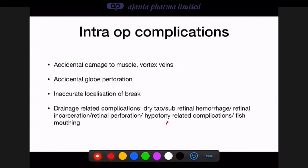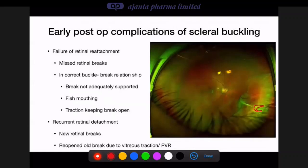Fish-mouthing can occur where the buckle is well-placed but the break communicates with fluid posterior to it — managed by injecting a bubble of air and lateral positioning, allowing the fold to flatten and cut off communication. Recurrent retinal detachment can result from new retinal breaks or re-opened old breaks due to vitreous traction and PVR.